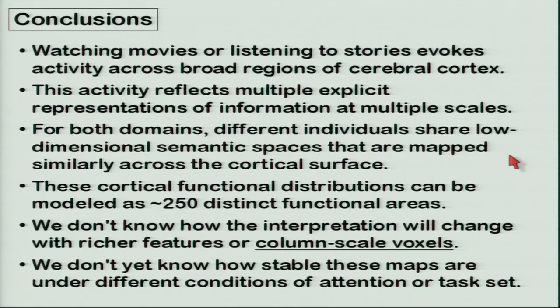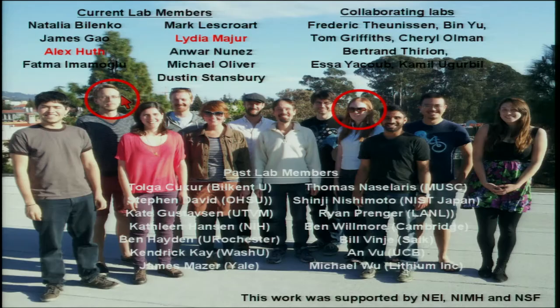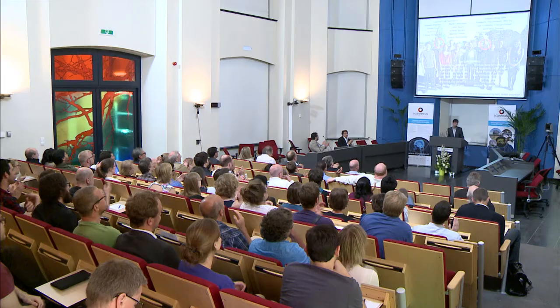I'm very excited about the prospects of column-scale MRI, because right now our voxels are way too big. This voxel-wise modeling approach will be very valuable when voxels become more selective, since we'll be sampling from a smaller volume of brain tissue. The future of interesting MRI is at high field. Watching movies or listening to stories evokes activity across broad cortical regions; representations are complicated. It looks like there are about 250 cortical areas — 120 or so in each hemisphere — representing semantic information from stories in one form or another. Credits go to Alex Huth for semantic and pragmatic modeling and Lydia Majure for the syntactic model.